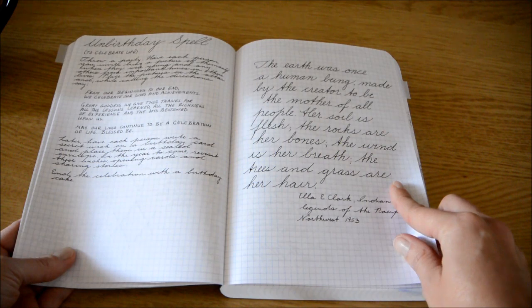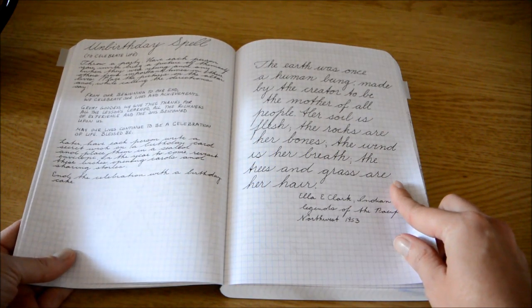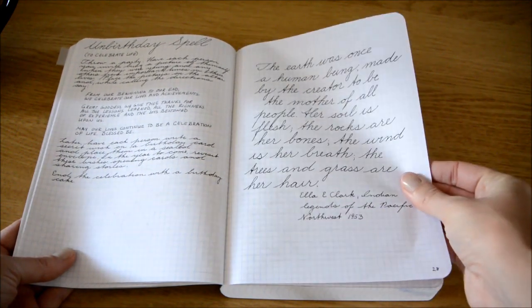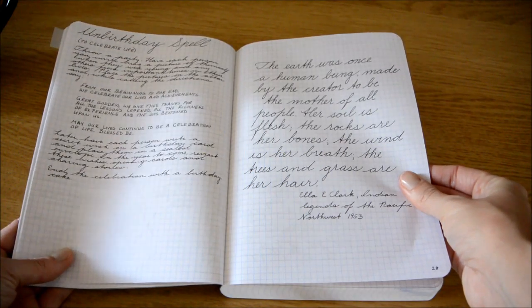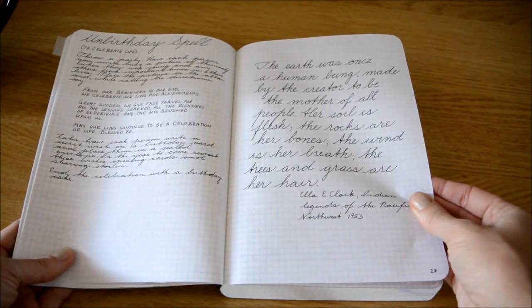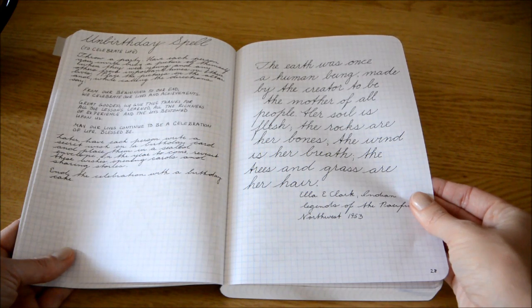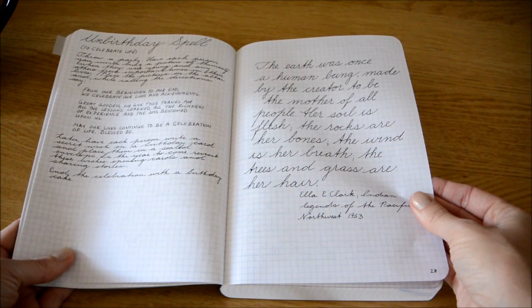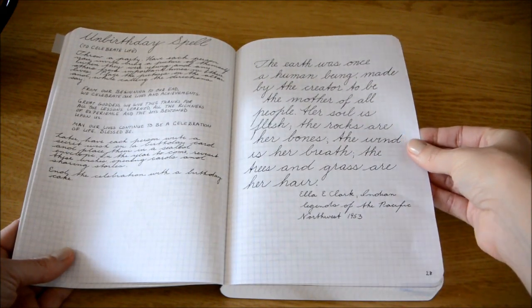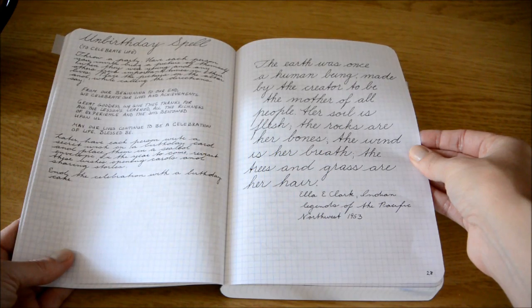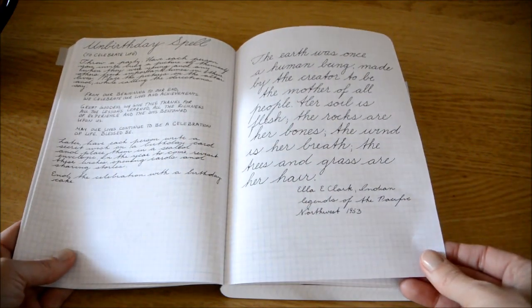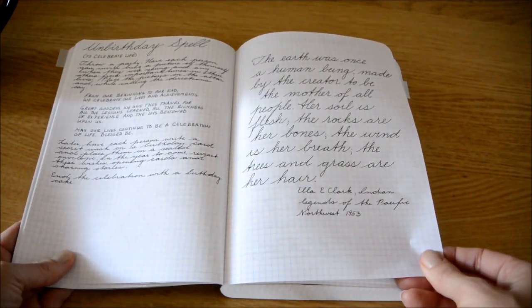Then I was in Portland visiting my brother and came across this quote in the museum. It was the Oregon Historical Society, I believe. And the quote is, the earth was once a human being, made by the creator to be the mother of all people. Her soil is flesh, the rocks are her bones, the wind is her breath, the trees and grass are her hair. And I just thought that was really beautiful, so I added it in. Nice big print.